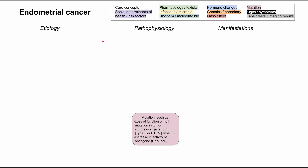At the center of endometrial cancer, the main pathophysiology is a mutation, as in many cancers. Breaking down the types of mutations that lead to cancers, you can either have a loss of function of a tumor suppressor gene, or a gain of function of a proto-oncogene. The relevant tumor suppressor genes worth knowing are p53 and p10, and you can have a loss of function or null mutation in either. The increase in activity happens in the oncogene HER2/neu. These also cause other types of cancers and are not unique to endometrial cancer.